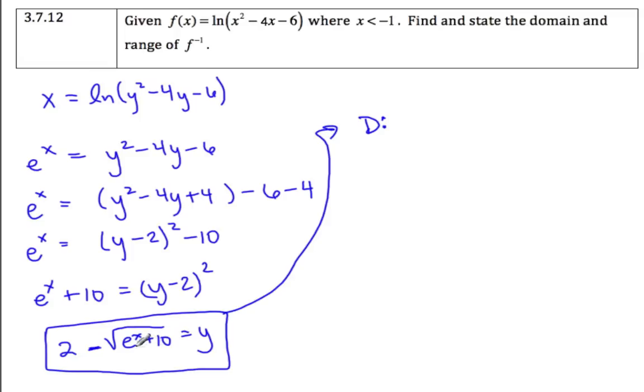e to the x plus 10 is definitely always positive, and the square root of that is also always positive. So I don't think there's any restraints on the domain, so the domain is all real numbers.